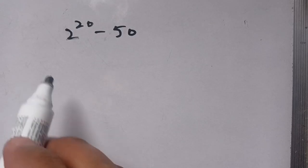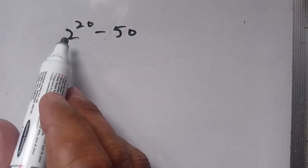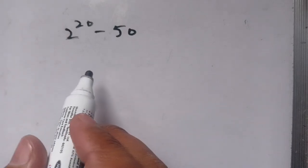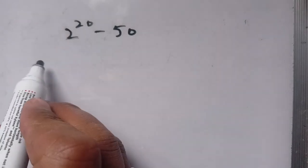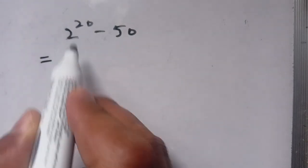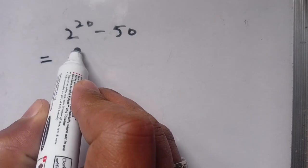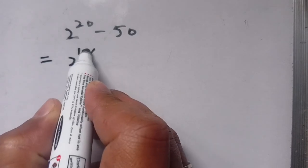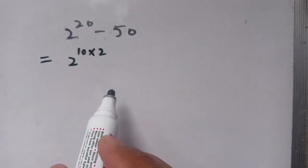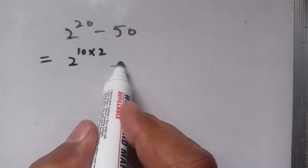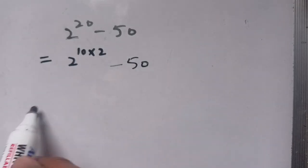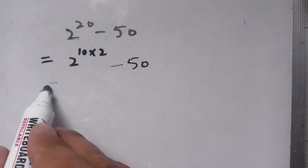Hello everyone, in today's video we are going to solve the problem 2 raised to the power 20 minus 50 without using any calculator. We can write it as 2 power 20, which can be broken down as 10 times 2 times 10 times 2, making it 20, and minus 50 as it is.